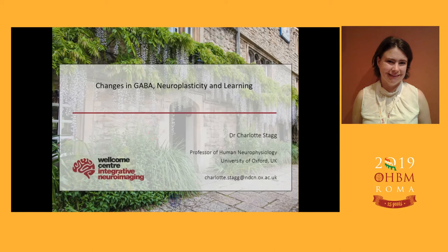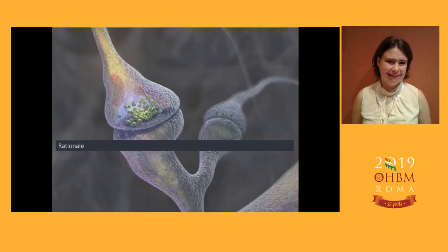So the first thing is why on earth might we want to measure this — why, when everything anybody knows from basic neurophysiology 101 is that plasticity is glutamatergic — so why should we care about GABA in this context?